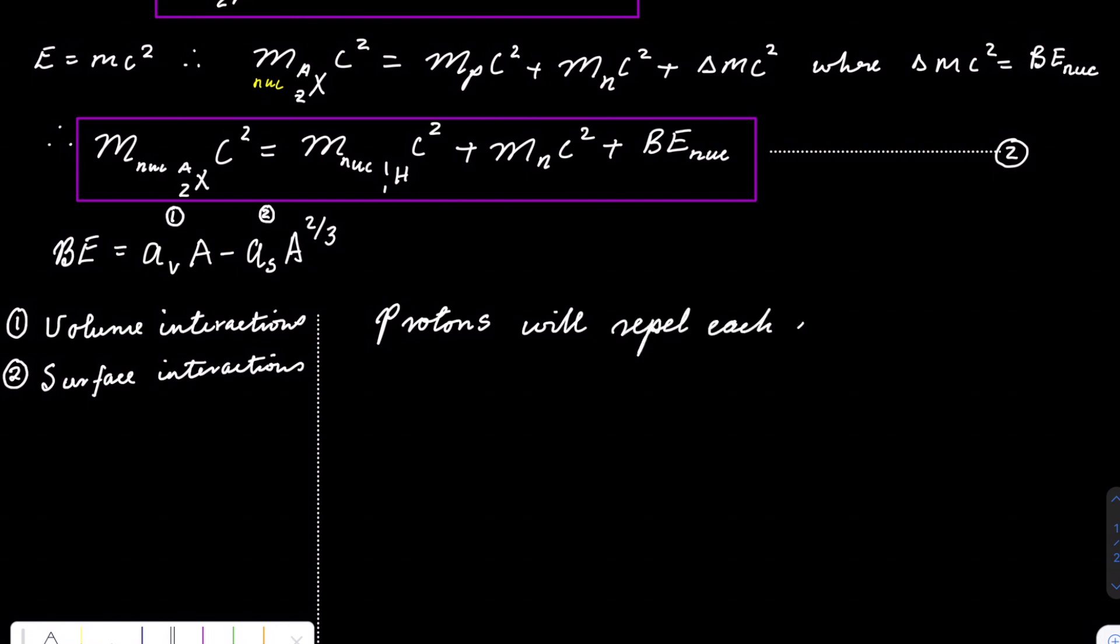Protons will repel each other according to Coulomb's law. F equals ke²/r². Energy will be given by ke²/r, where r can be the radius of the nucleus.